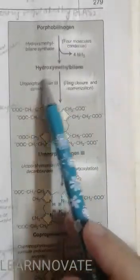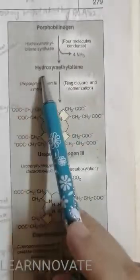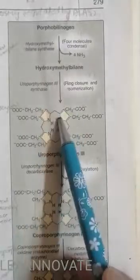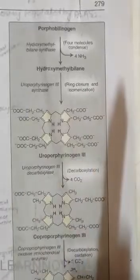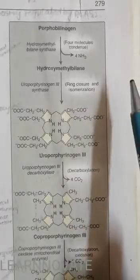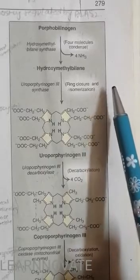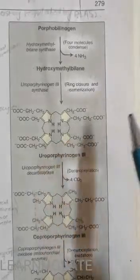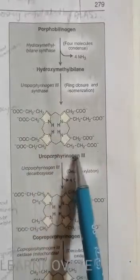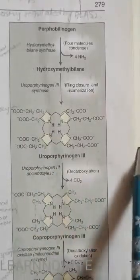This hydroxymethylbilane, containing a hydroxyl group and a methyl group, is then converted into uroporphyrinogen III, a ring-shaped structure compound formed in the presence of uroporphyrinogen synthase enzyme. This enzyme forms uroporphyrinogen III, which is a precursor of uroporphyrin.